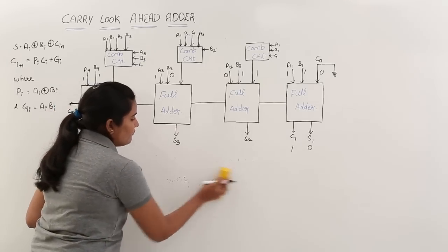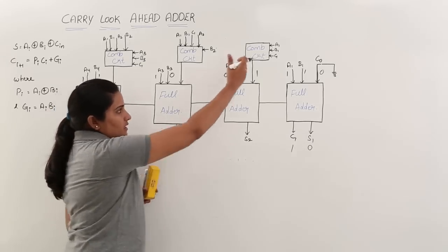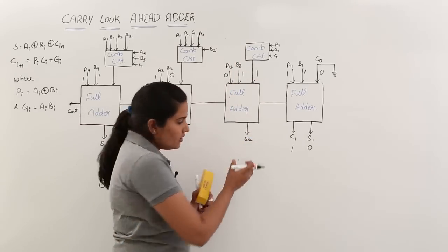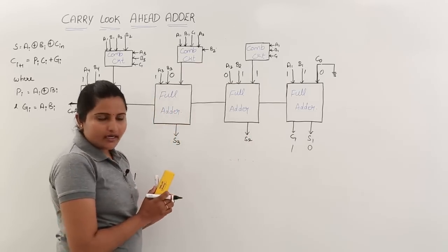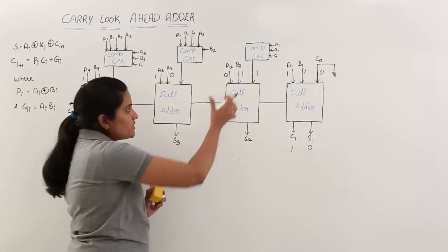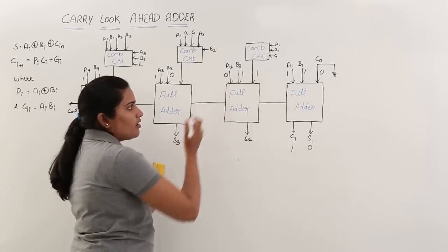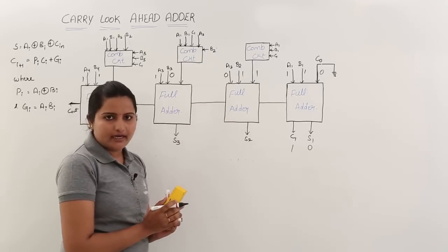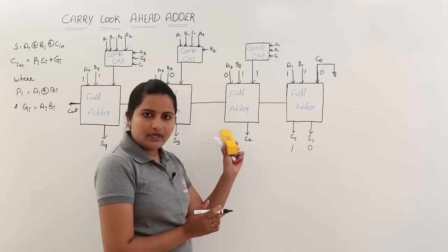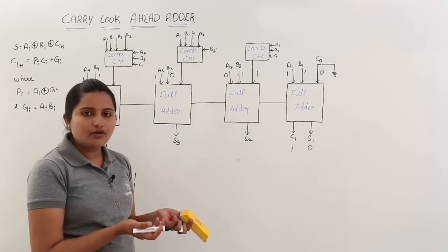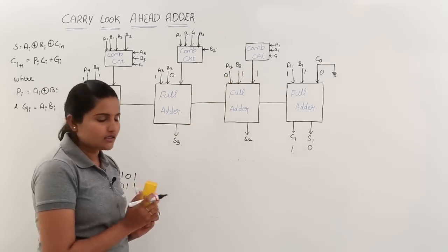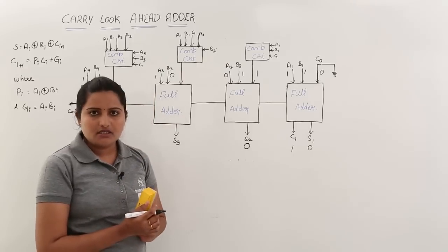After getting 1 from this combinational circuit, what is the output of this second full adder? For the sum, you take XOR of all inputs. The inputs to this second full adder are 0, 1, and 1 — that is an even number of ones, so XOR gives 0. Therefore S2 = 0.